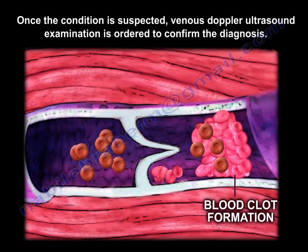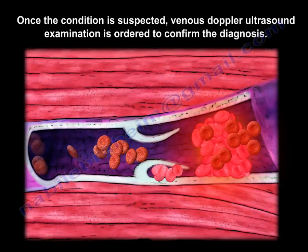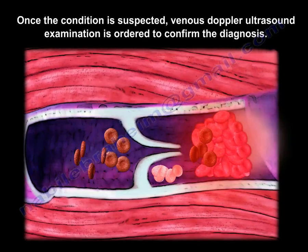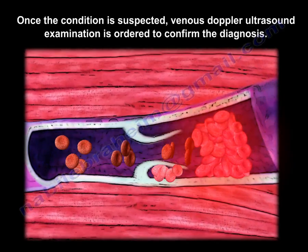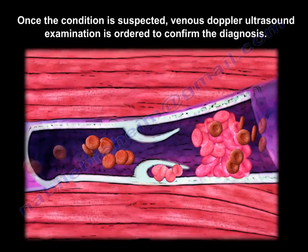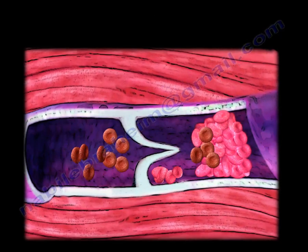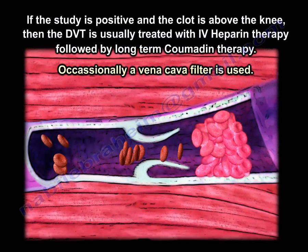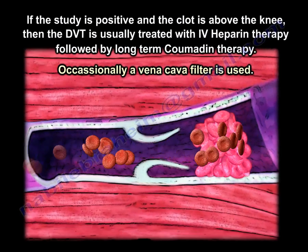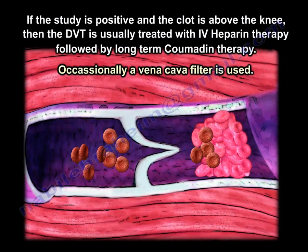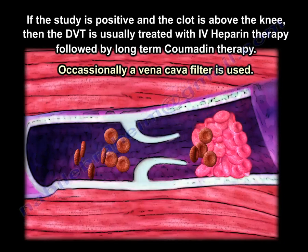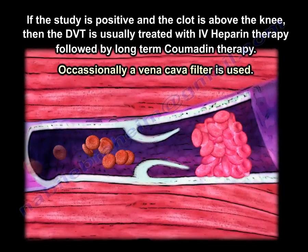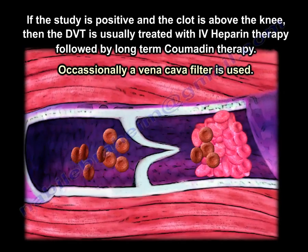Once the condition of DVT is suspected, a venous Doppler ultrasound examination is ordered to confirm the diagnosis. If the study is positive and the clot is above the knee, DVT is usually treated with heparin therapy followed by long-term Coumadin therapy. Occasionally, a vena cava filter is used.